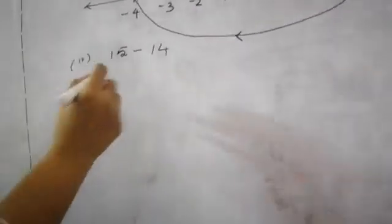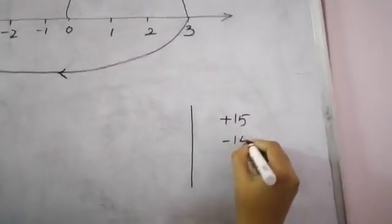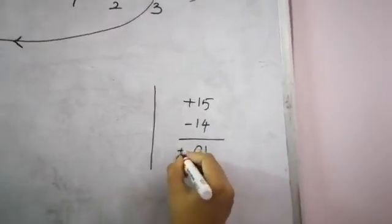Now question number 4. 15 minus 14. Side work. Plus 15, minus 14. Two different signs. Subtract. So your answer is plus 1.